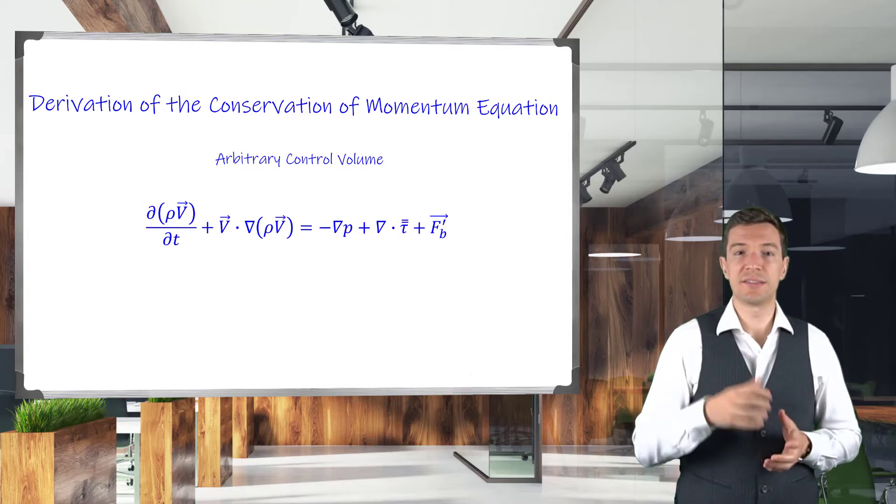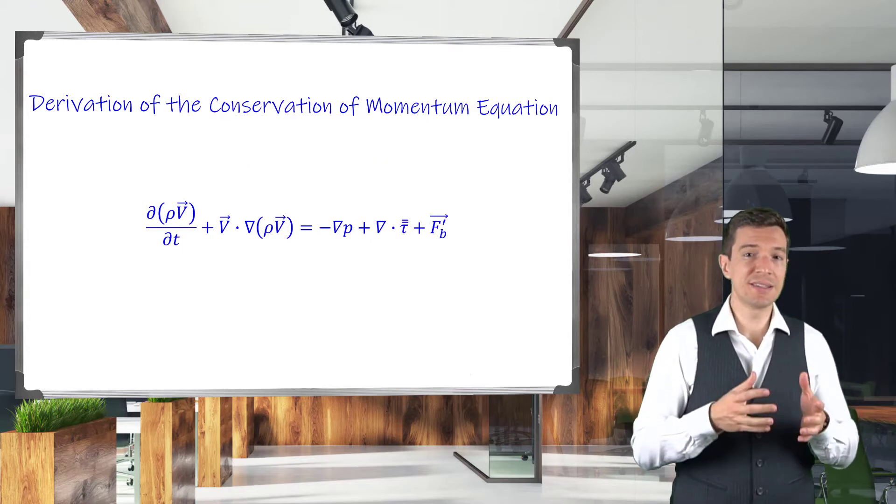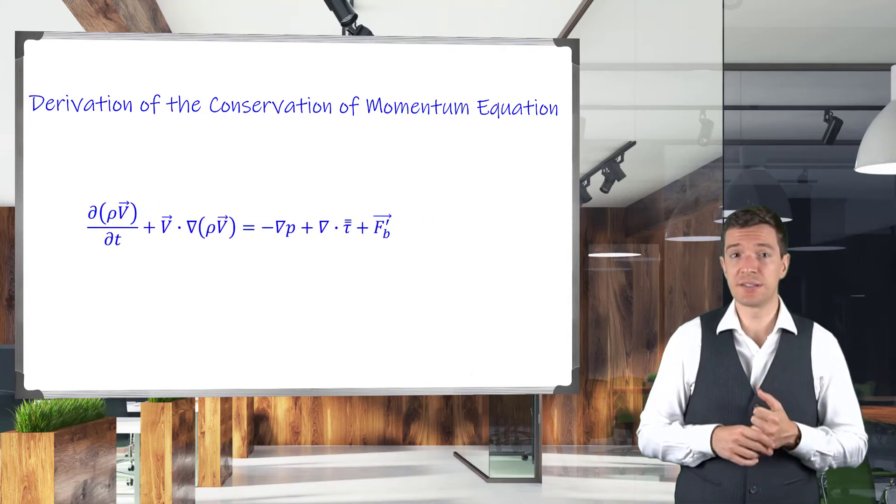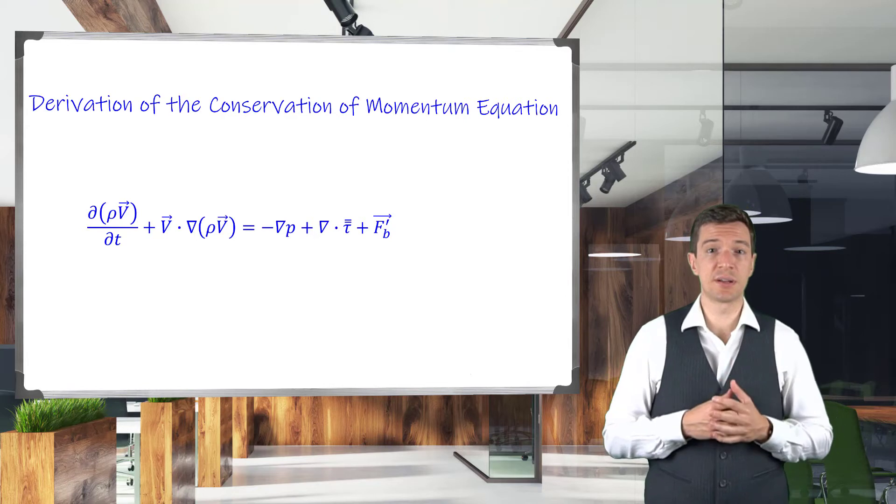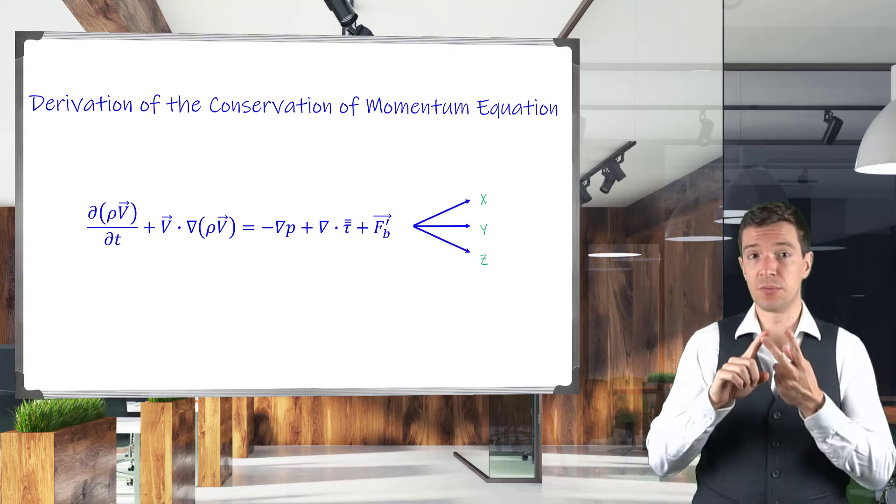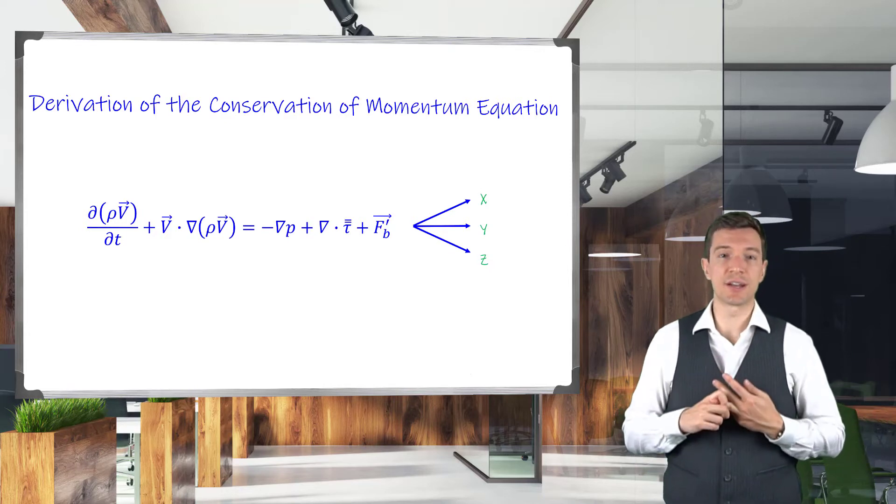Note that the momentum equation is a vector equation. This means that in Cartesian coordinates, we will have three different equations, one for the x-direction, one for the y-direction, and one for the z-direction.